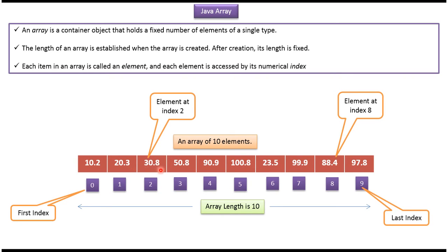An array is a container object that holds a fixed number of elements of a single type. The length of the array is established when the array is created, and after creation the array length is fixed — it cannot be changed. Each item in the array is called an element, and each element is accessed by its numerical index.